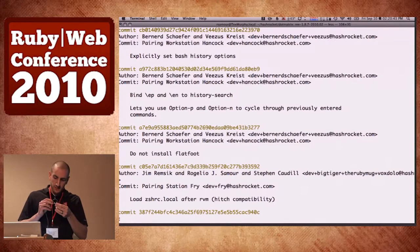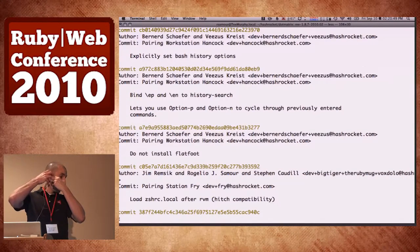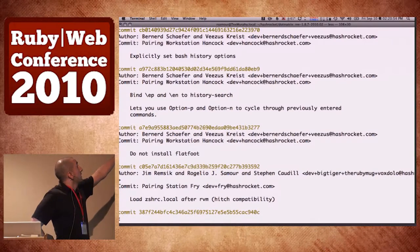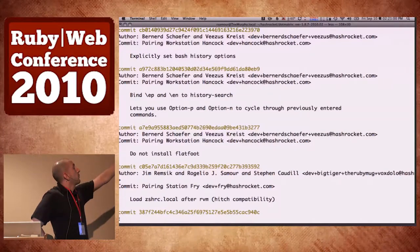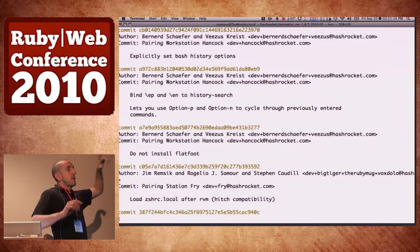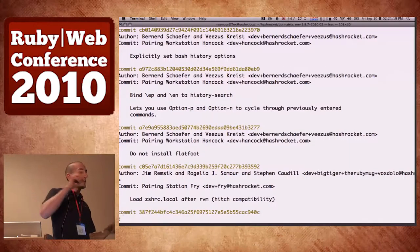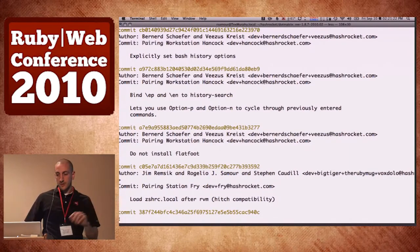The committer is the pairing station because that's what they were working on. But then the author is Dev — we have this email dev at Hashrocket. And then you can do pluses after that — any number of pluses. So dev plus Bernard Schaefer, which is his GitHub, and then Visas, which is his GitHub username. Then we go to Gravatar and create a Gravatar for that unique email, and when it shows up in GitHub you'll see their picture based on that Gravatar.